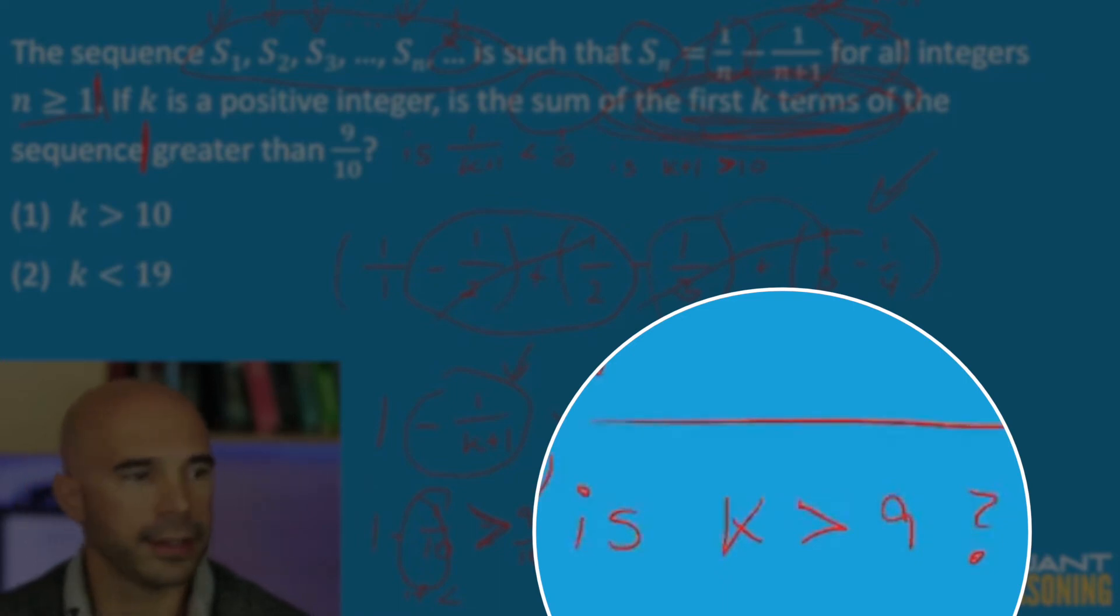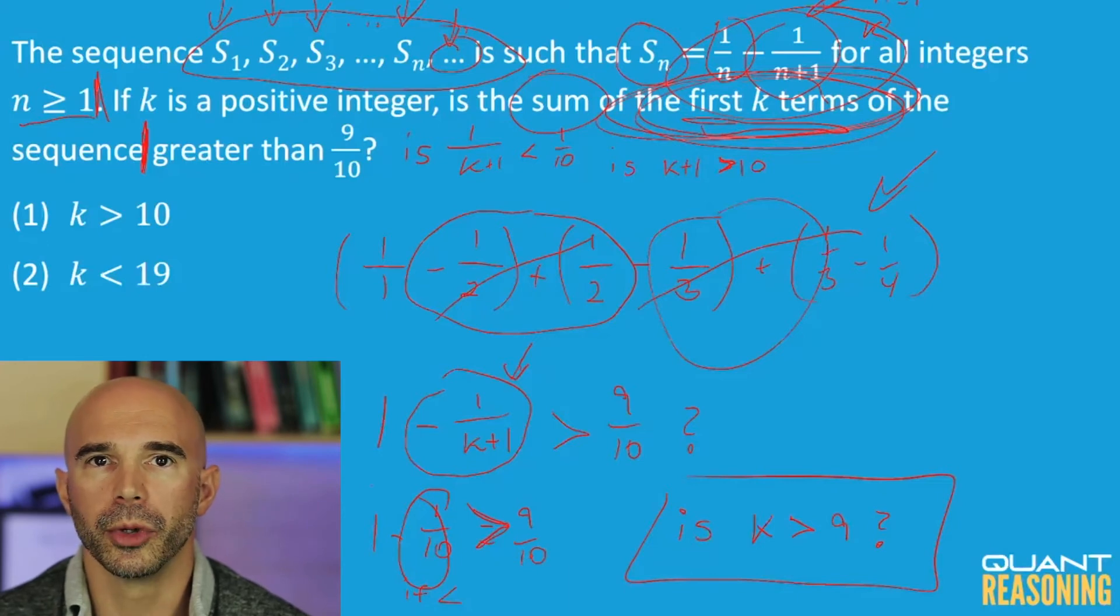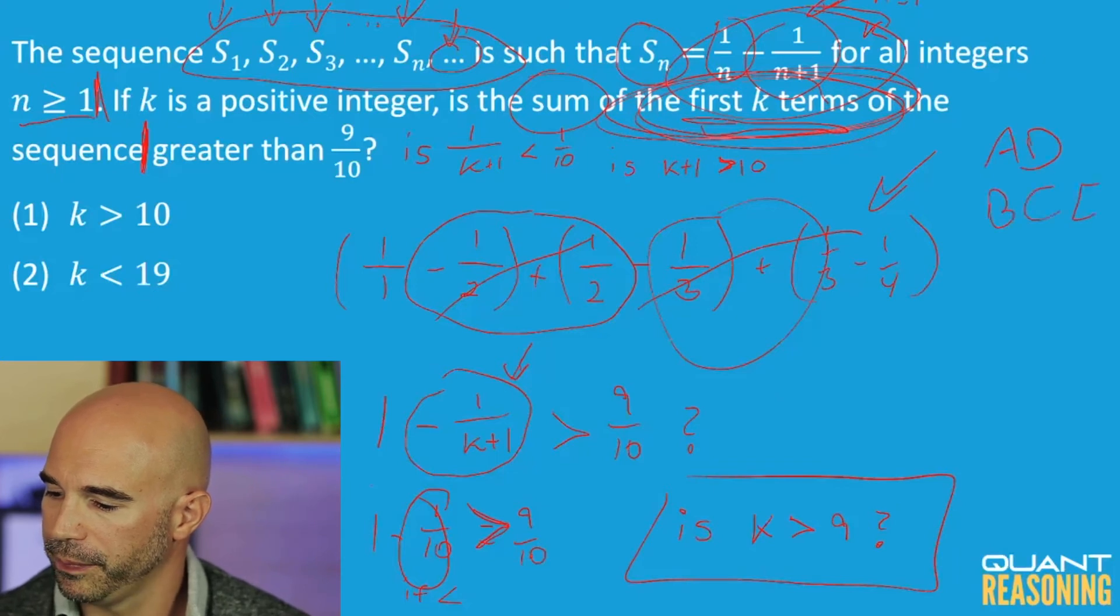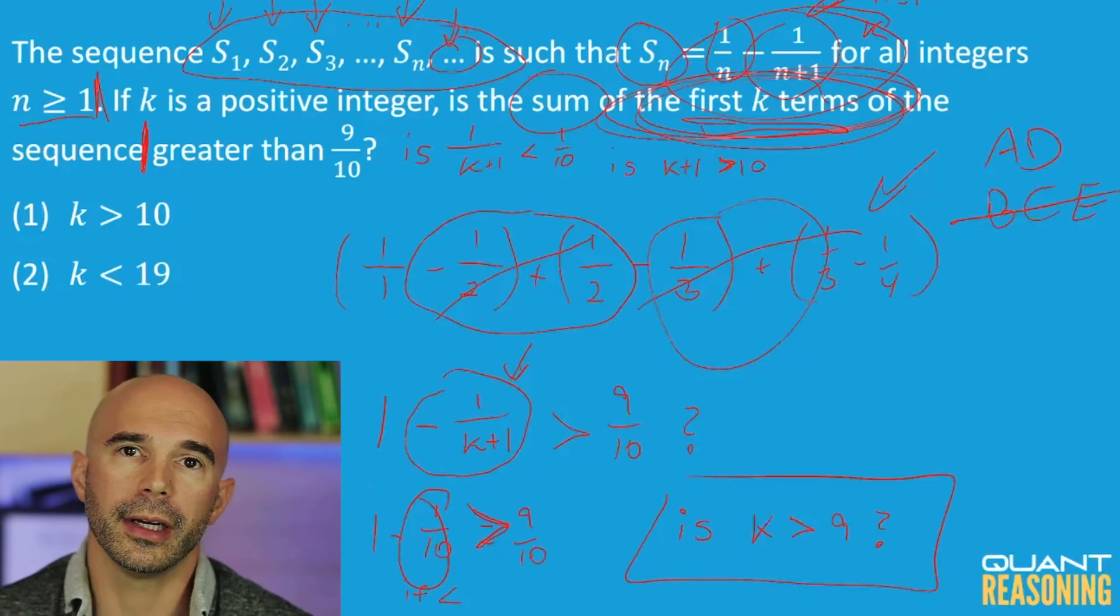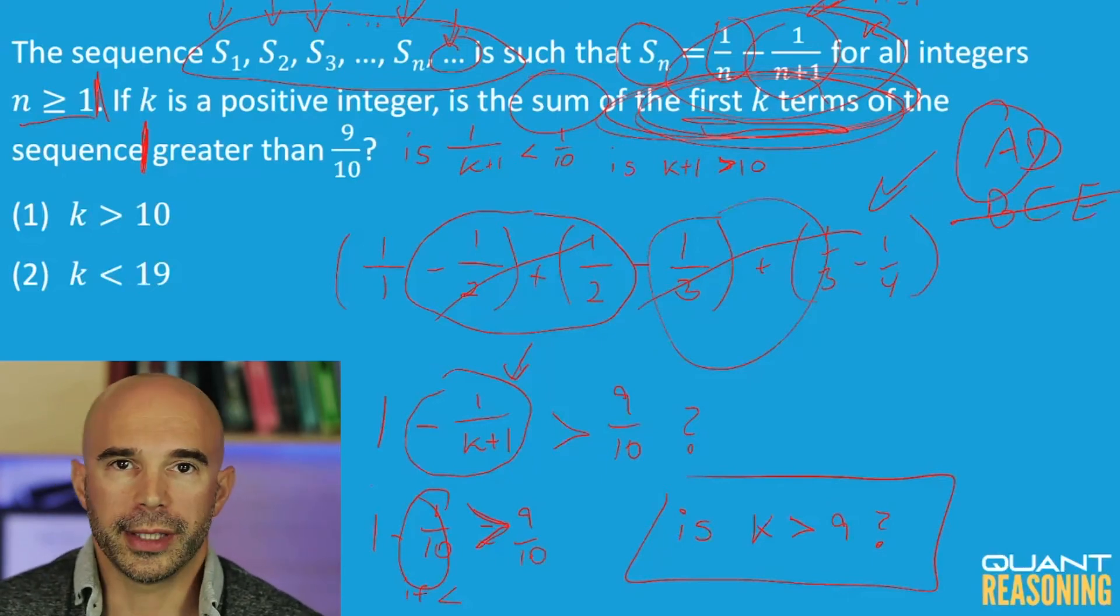And if you manage to get that far, then evaluating the statements is fairly easy because statement 1, of course, gives us a definitive yes. Anything that's more than 10 is, of course, more than 9. So knowing that it's more than 10 answers the question definitively, and we should eliminate the answer choices that claim that statement 1 is not sufficient on its own. And statement 2 tells us it's less than 19. So knowing that something is less than 19, are you able to tell which side of 9 it's on? Whether it's more or less than 9? No, we can't tell. All we know is less than 19. So the correct answer is A.